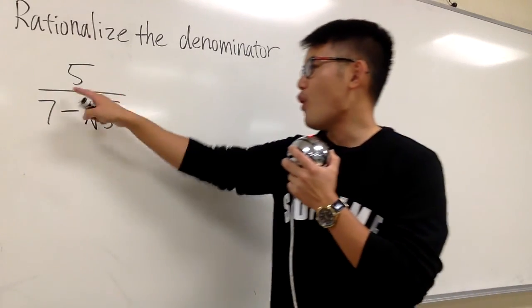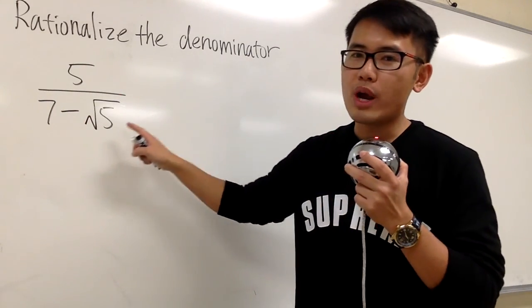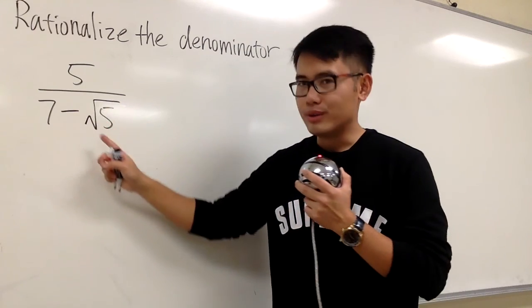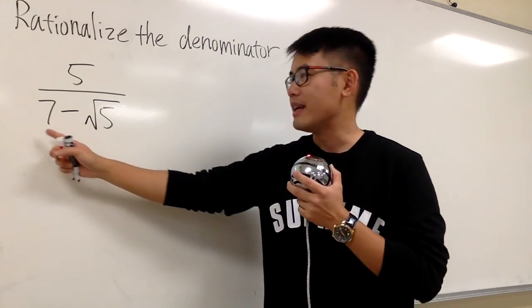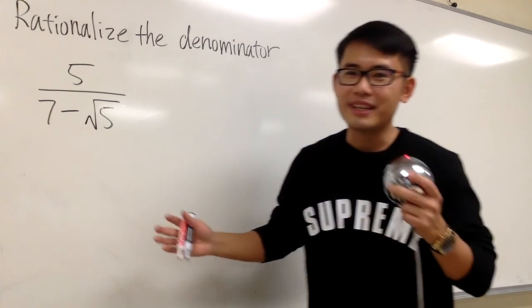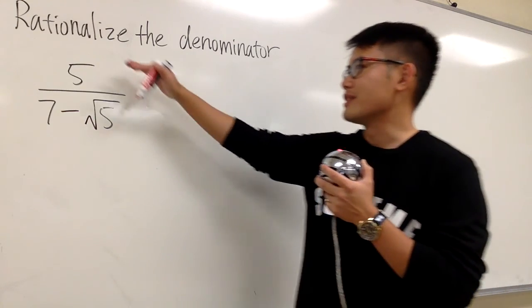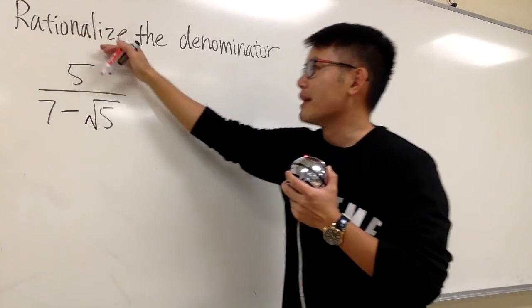Okay, here we have 5 over 7 minus square root of 5. We know square root of 5 is irrational, and the denominator is once again irrational. So of course the direction is telling us to rationalize the denominator.